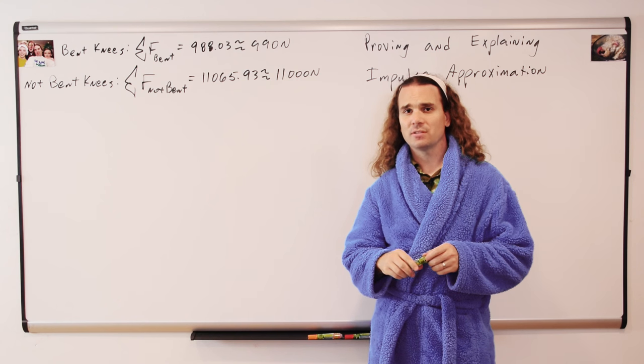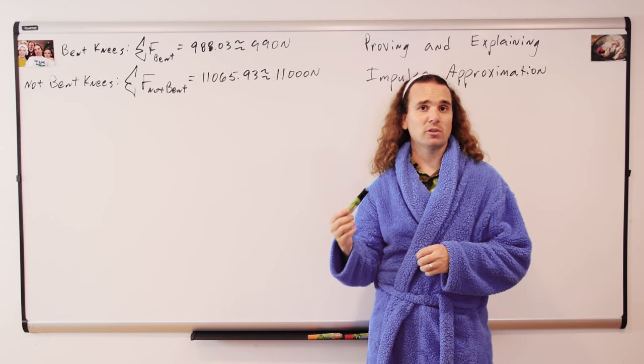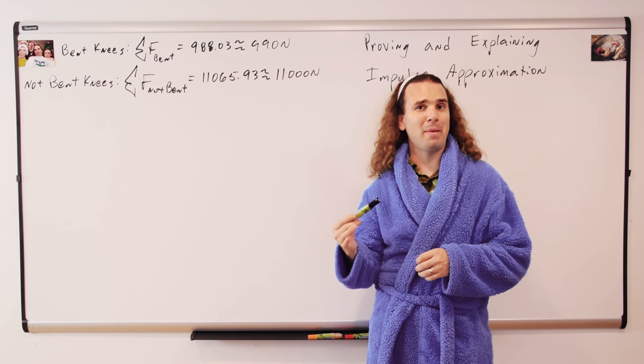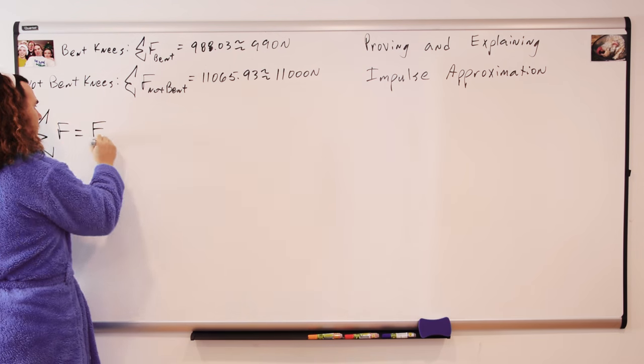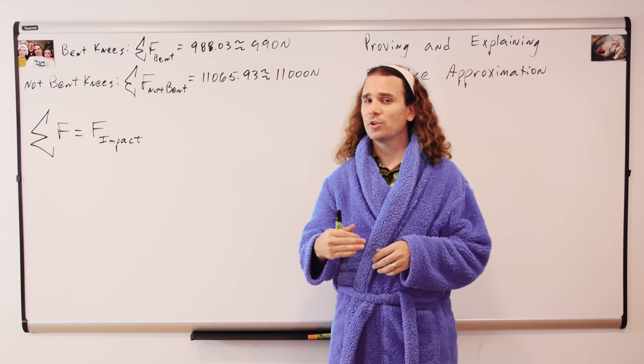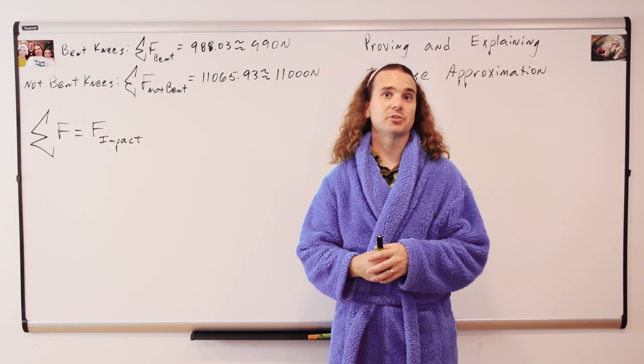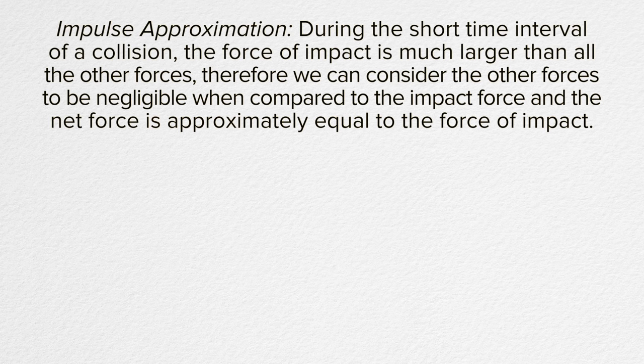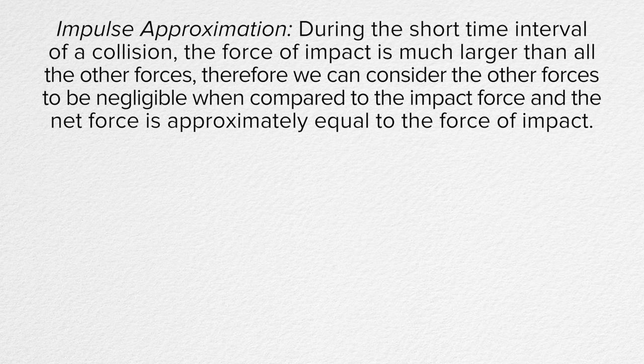An important item to notice is that we use the net force acting on me as the force of impact on my body. We were able to say this because we were using the impulse approximation. The impulse approximation states that during the short time interval of a collision, the force of impact is much larger than all the other forces. Therefore, we can consider the other forces to be negligible when compared to the impact force and the net force is approximately equal to the force of impact.